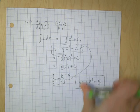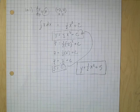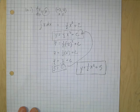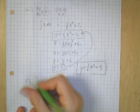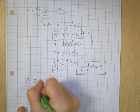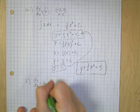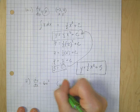Okay, let's do one more. So dy/dx is equal to 6x squared, and it's passing through the point 0, 5.